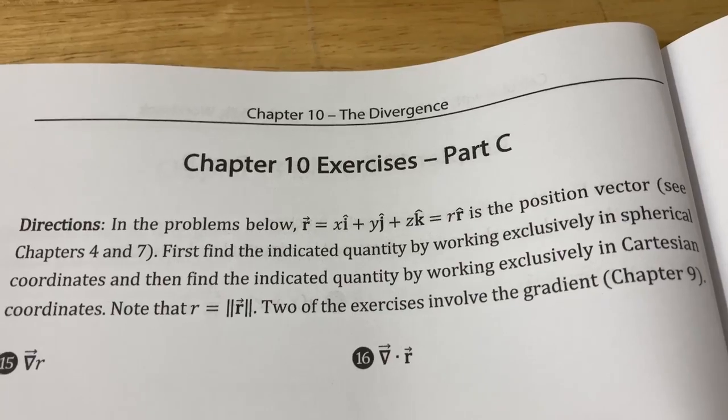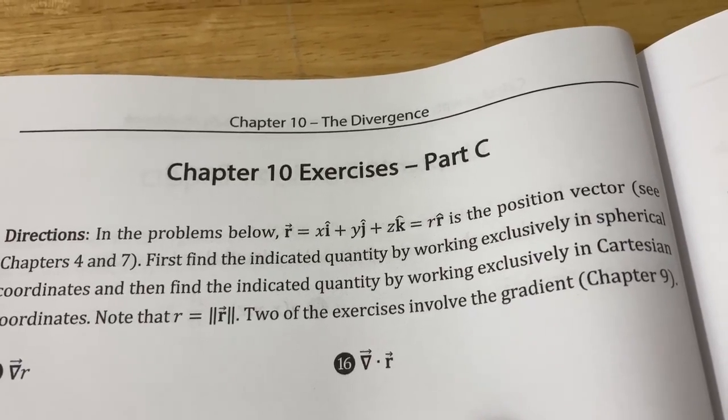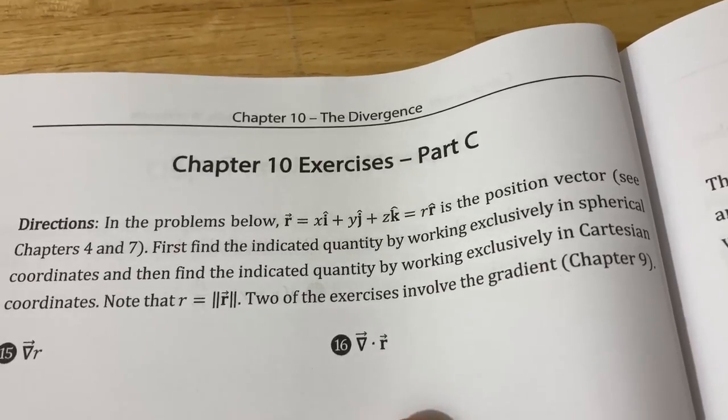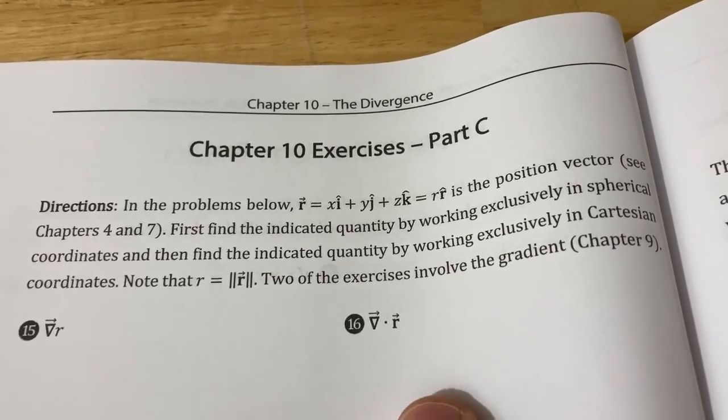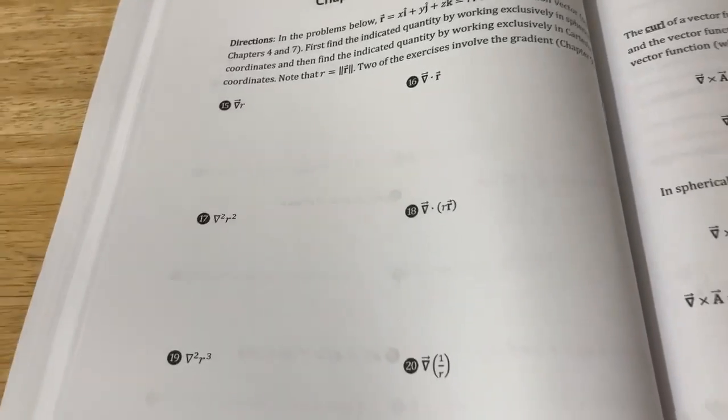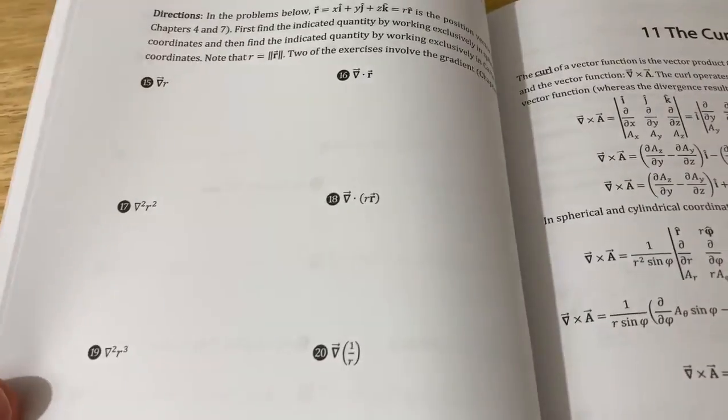And then here is a different problem. He gives you a position vector, and he asks you to find the indicated quantity by working exclusively in spherical coordinates, and then find the indicated quantity by working exclusively in Cartesian coordinates. Really nice. And again, you have solutions, which makes it absolutely incredible.